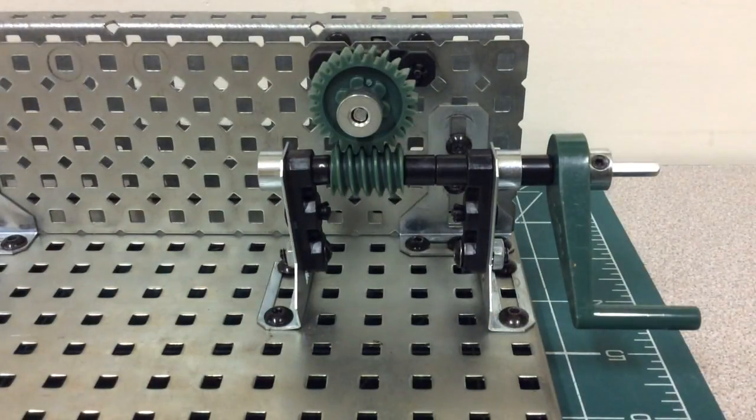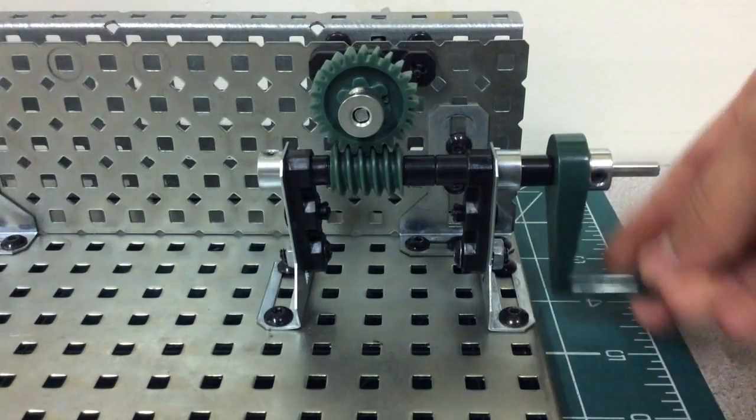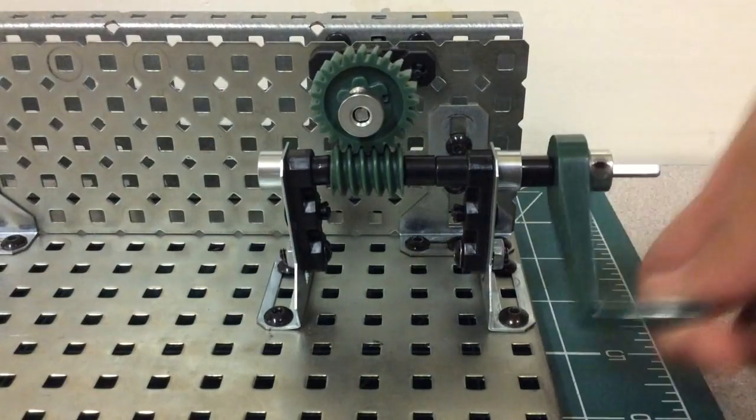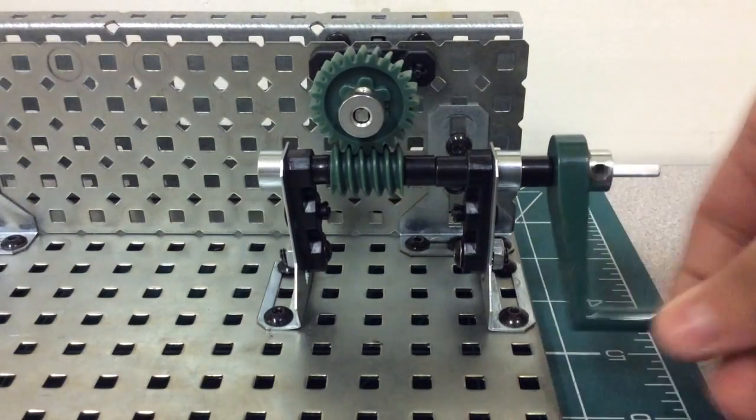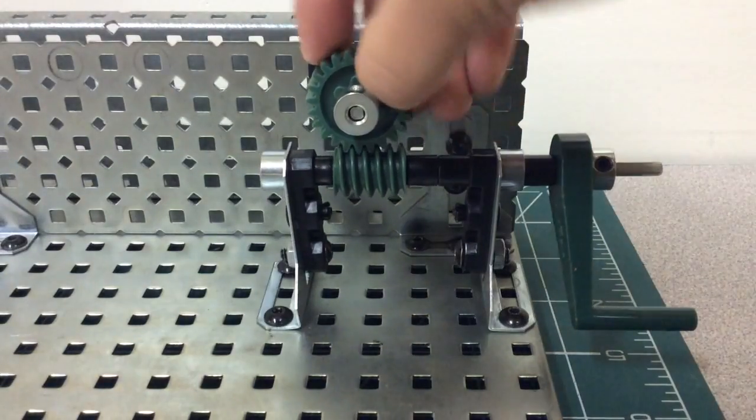And it moves slowly so it doesn't have fast acceleration. And direction of travel can be reversed because it can move both ways. And the flow of power cannot be reversed because the wheel won't move the worm.